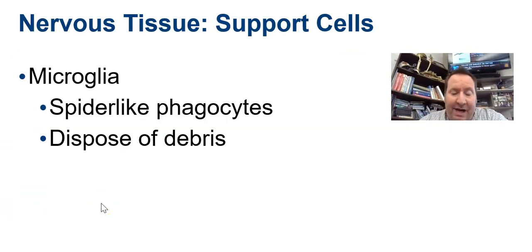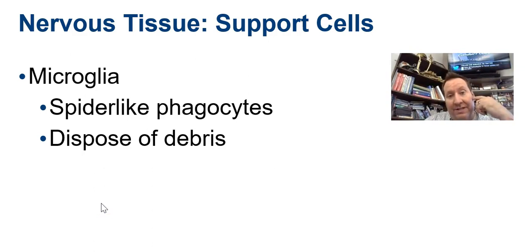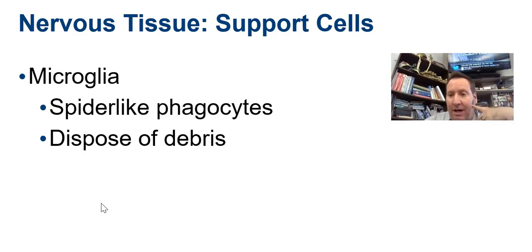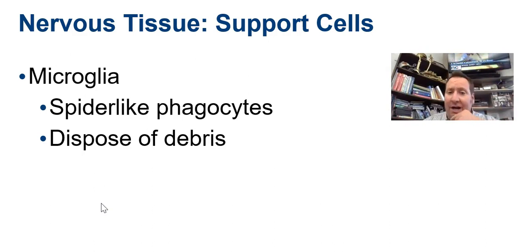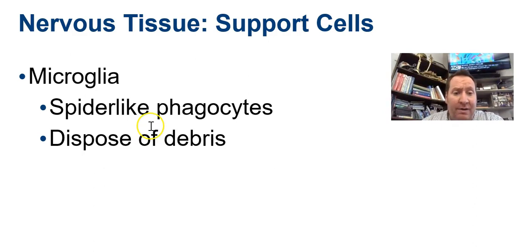The next neuroglial cell is a microglial cell. Microglial cells act like macrophages in the central nervous system. They remove dead neurons, clean up debris, and if there is a foreign invader, they take it out through phagocytosis. You can kind of think of a microglial cell as a janitor slash bodyguard.